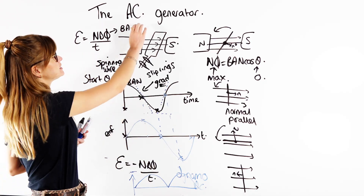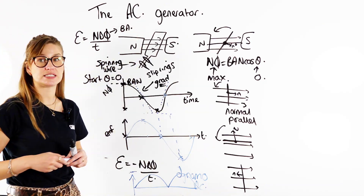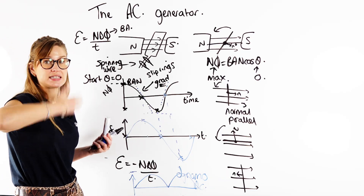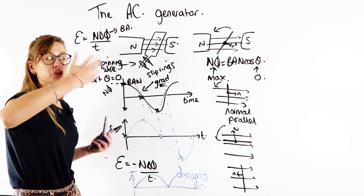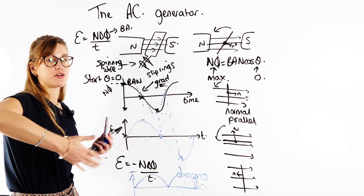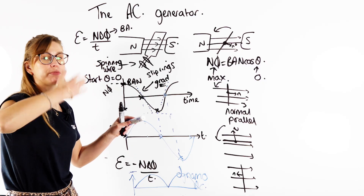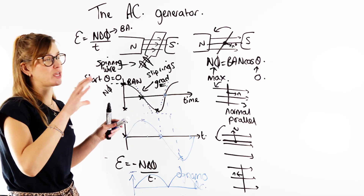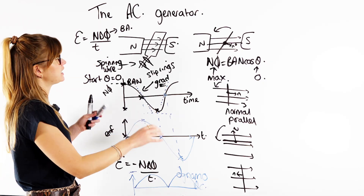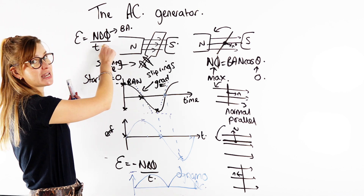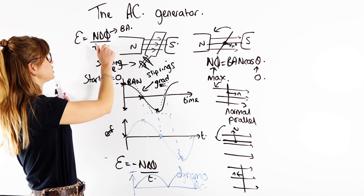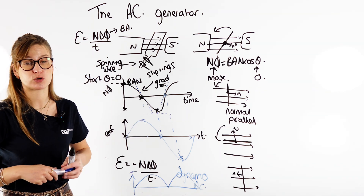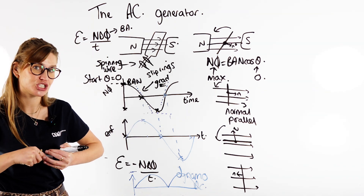We use this in our power stations: a spinning wire inside a magnet constantly changes the number of magnetic field lines passing through the area of the coil. The rate of change of magnetic flux linkage is directly proportional to the induced EMF.